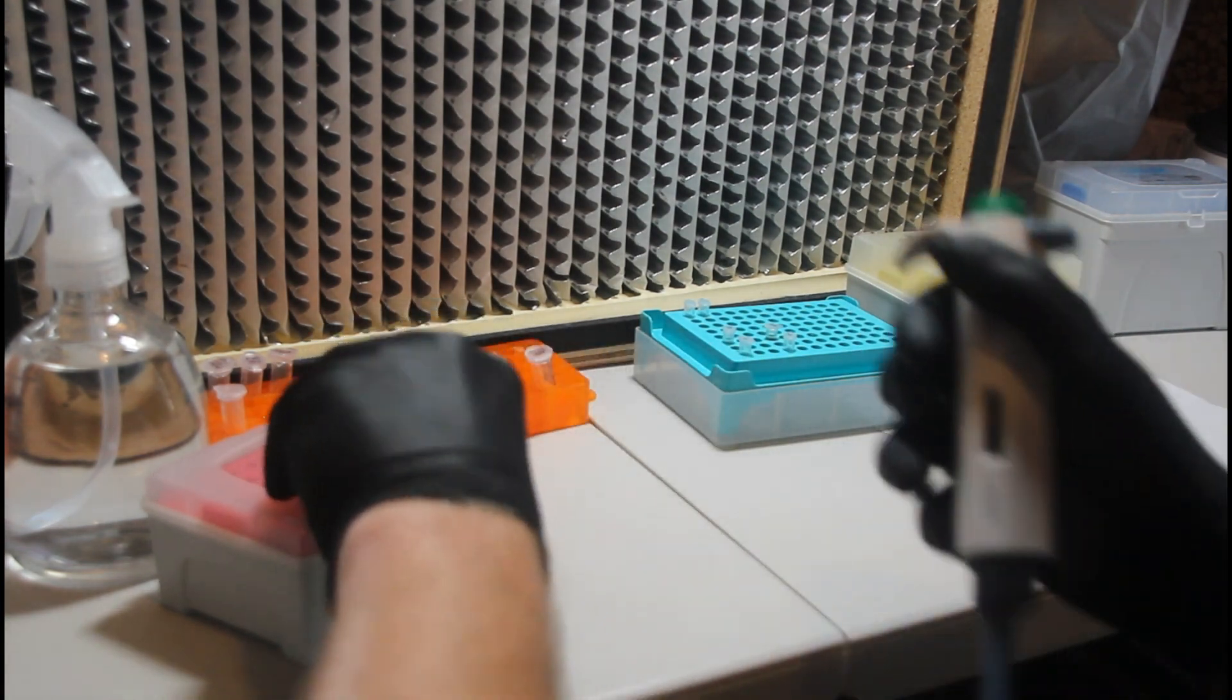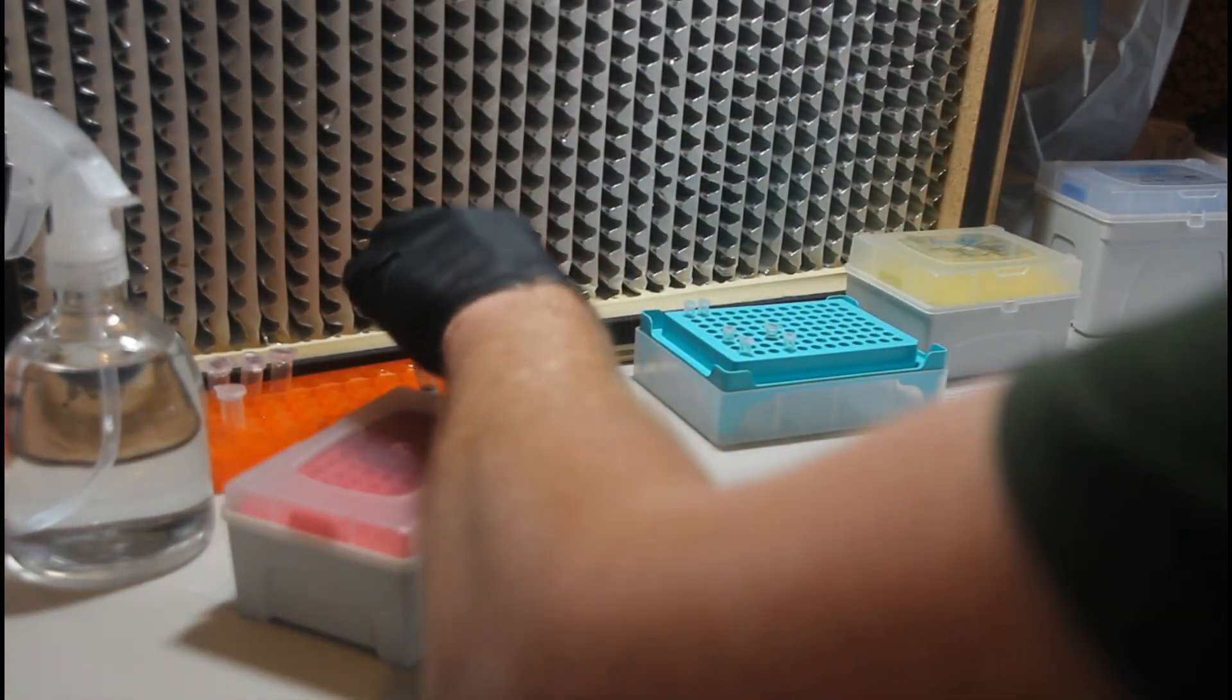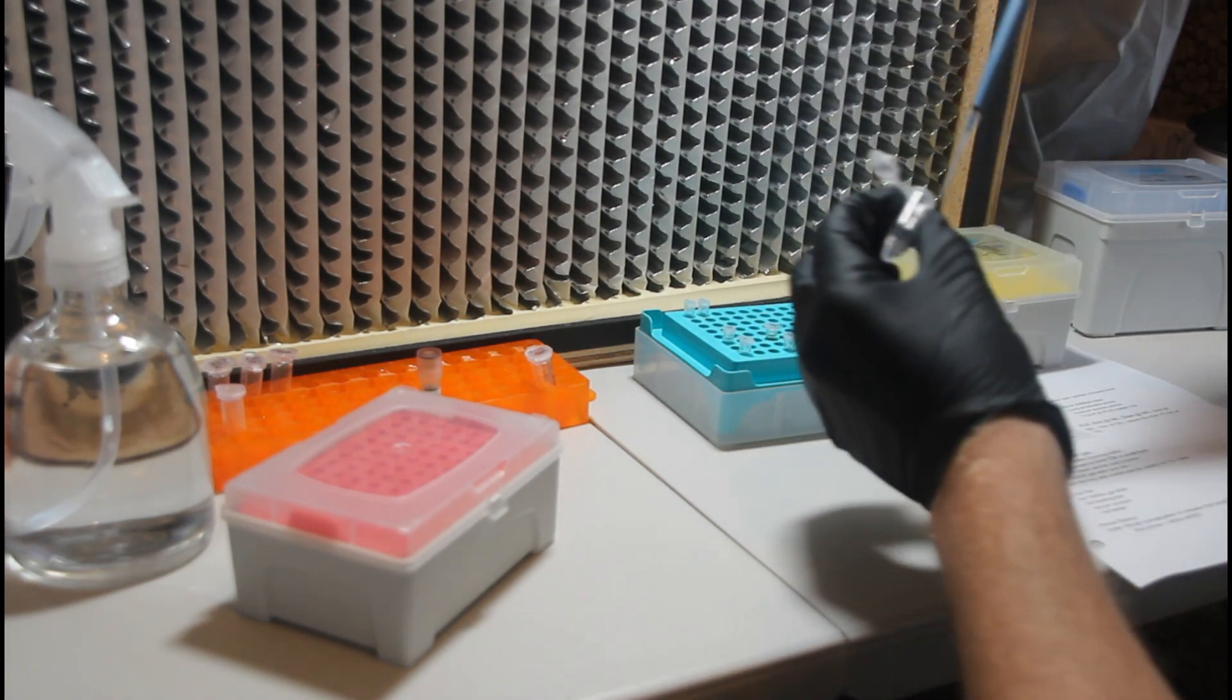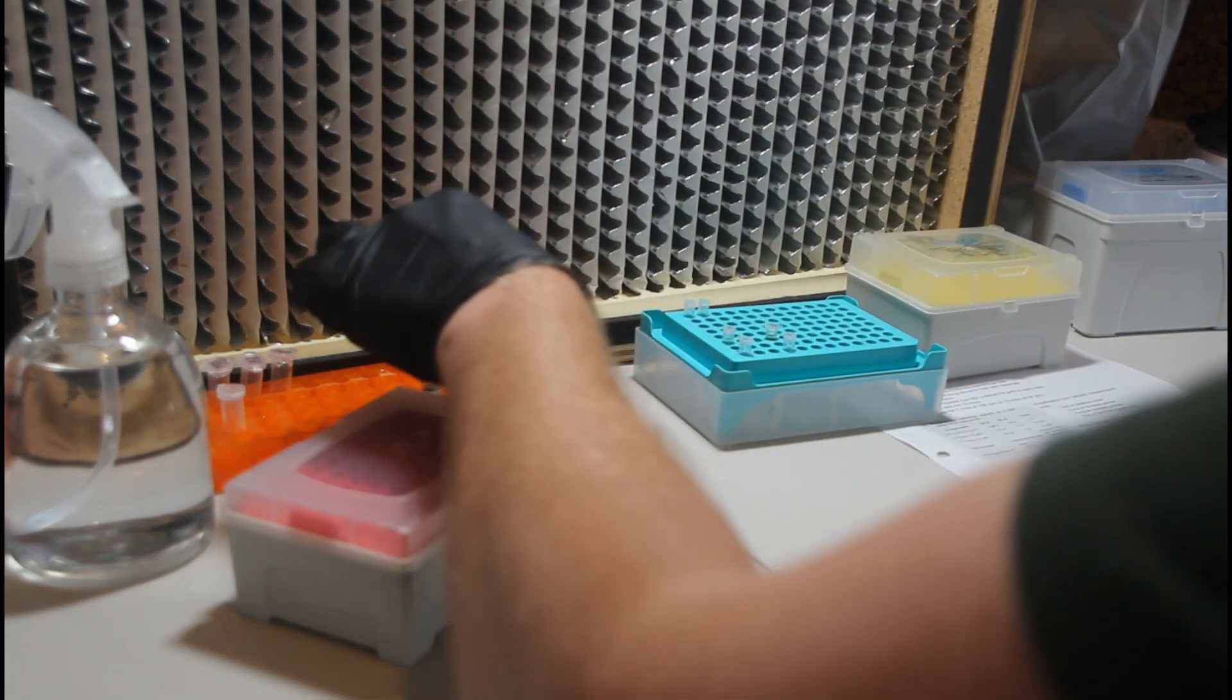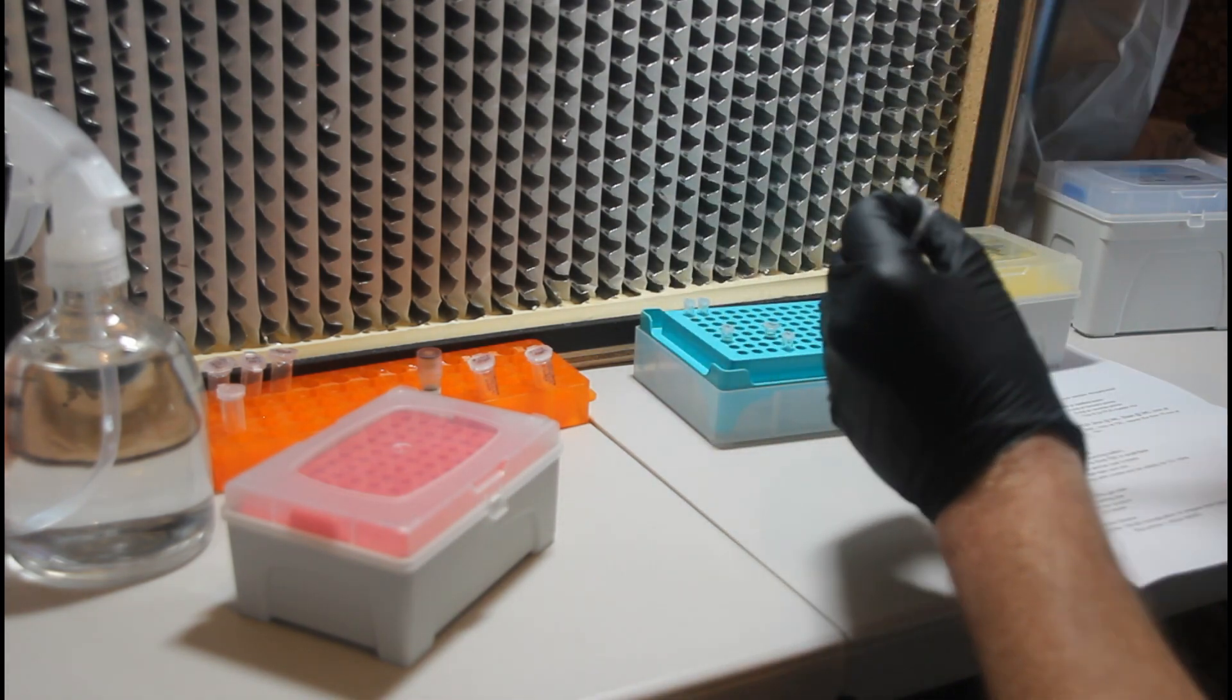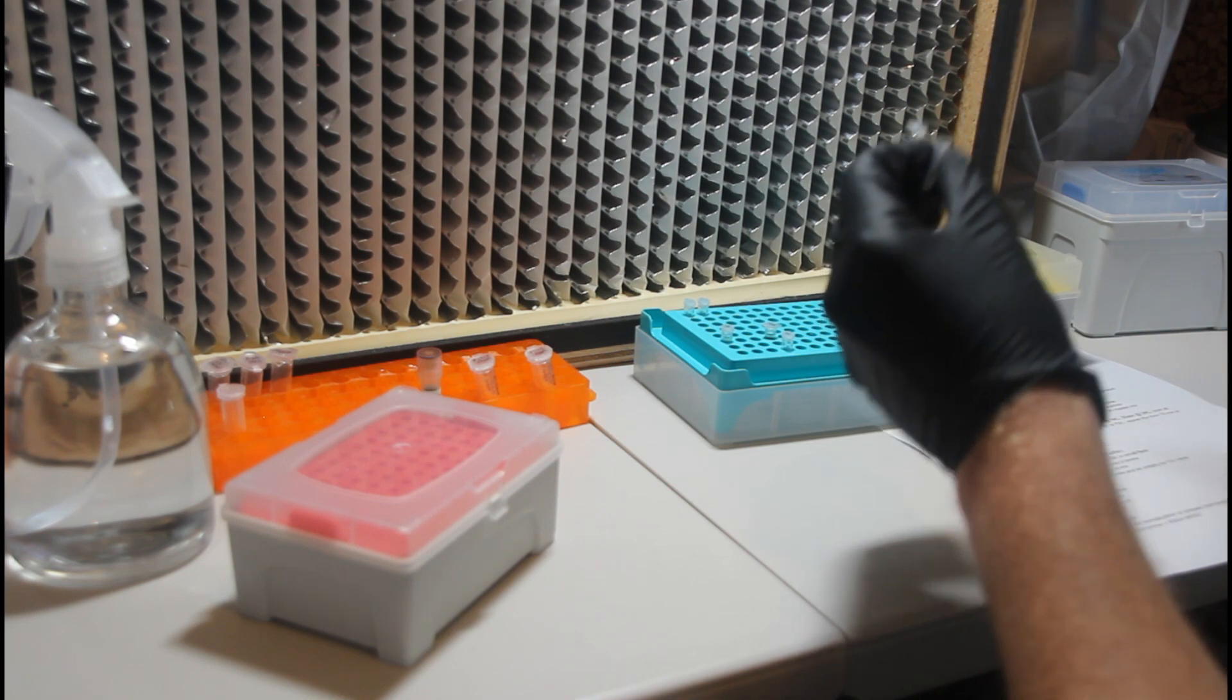Now it's time to add the forward and reverse primers. So you will want to use a new pipette tip for each one of these as well. And for the forward primer, we're going to add 0.5 microliters to each of the tubes. And for the reverse primer, we're going to use the same amount, 0.5 microliters of the reverse primer in each of the PCR reaction tubes.